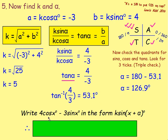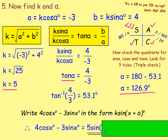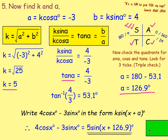Writing 4 cos x minus 3 sin x in the form k sin(x plus α): we have just found k equals 5 and α equals 126.9 degrees. So we can rewrite that as 5 sin(x plus 126.9°). And that's the answer to that one.